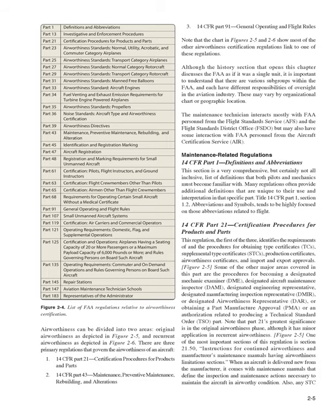Title 14 CFR Part 21, Certification Procedures for Products and Parts. This regulation identifies the requirements and procedures for obtaining type certificates (TCs), supplemental type certificates (STCs), production certificates, airworthiness certificates, and import and export approvals. Some of the other major areas covered include procedures for becoming a Designated Mechanic Examiner (DME), Designated Aircraft Maintenance Inspector (DAMI), Designated Engineering Representative, Designated Manufacturing Inspection Representative (DMIR), Designated Airworthiness Representative (DAR), or obtaining a Part Manufacture Approval (PMA) or Authorization Related to Producing a Technical Standard Order (TSO). Note that Part 21's greatest significance is in the original airworthiness phase, although it has minor application in recurrent airworthiness.